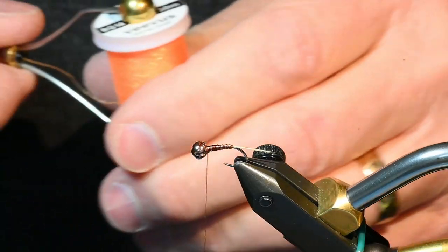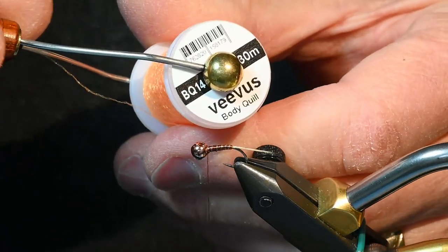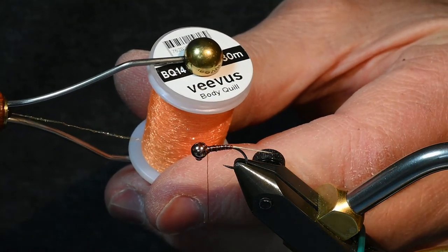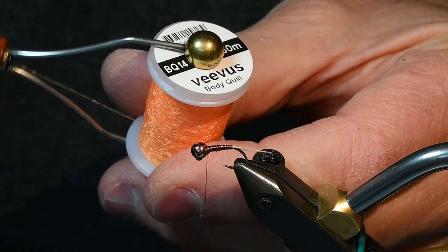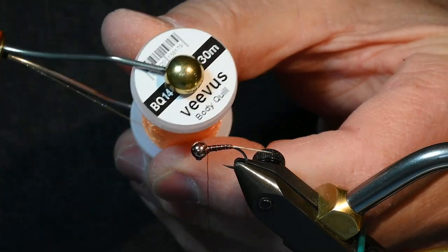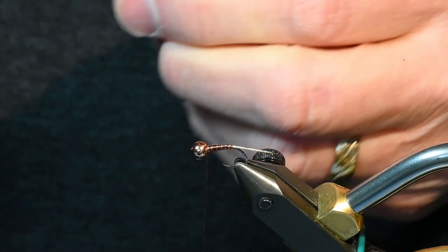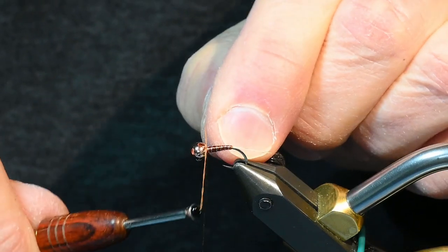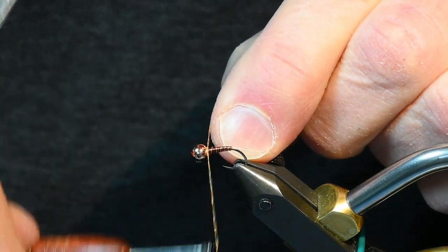Now for the thorax area I'm going to use Vivas body quill again and this is some orange. It's BQ 14, the color.